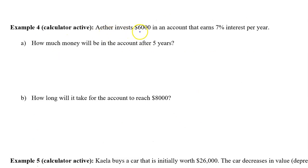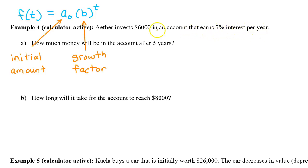Ether invests $6,000 in an account that earns 7% interest per year. This is an exponential growth problem. Exponential growth or decay can be modeled by f of t equals a-zero times b to the t power, where a-zero is the initial amount and b is the growth factor.